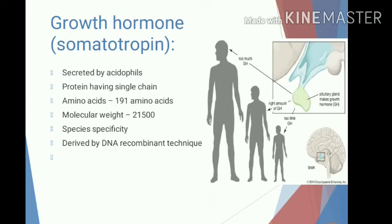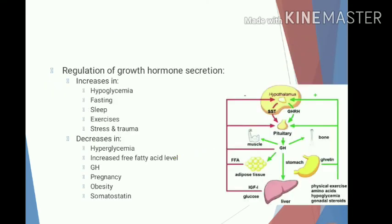Growth hormone consists of a single unbranched chain containing 191 amino acids and two disulfide bonds. Its molecular weight is about 21,500. Growth hormone obtained from different species shows chemical as well as immunological variations, and therefore it shows species specificity. Human growth hormone and monkey growth hormone have similar biological activities. Growth hormone is derived from DNA recombinant technology.